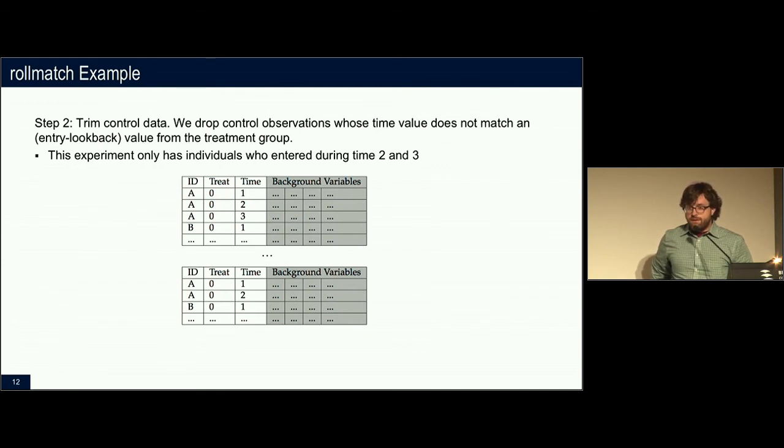Step two is going to be to trim this control group. And so we trim that based on the time variable because we want control observations that could have entered this intervention at the same time as the treatment observations. So any control line that doesn't match a treatment line is going to be removed. So that's what we do in step two.